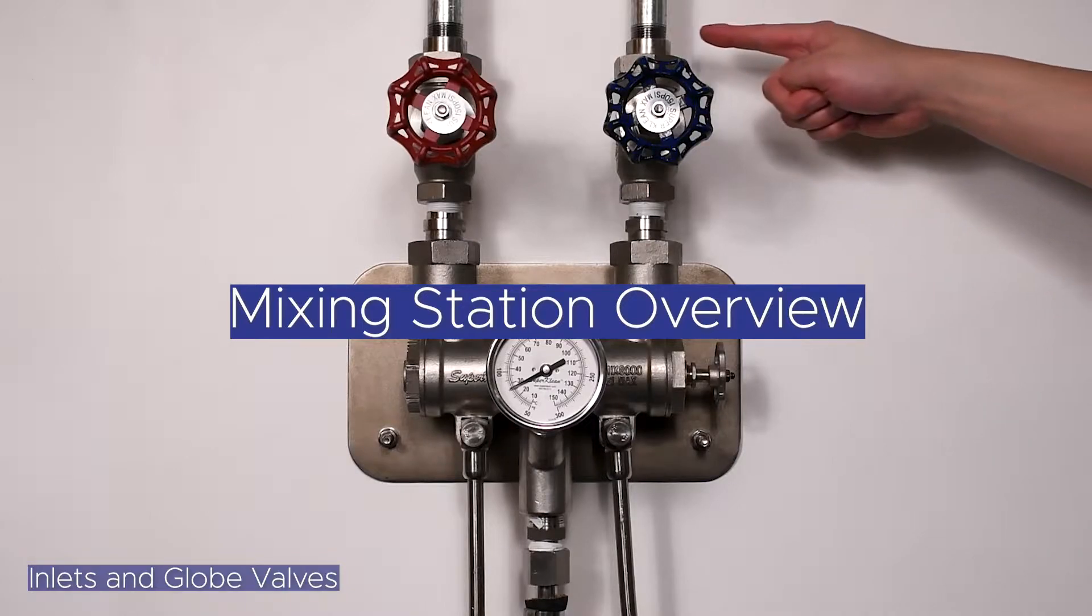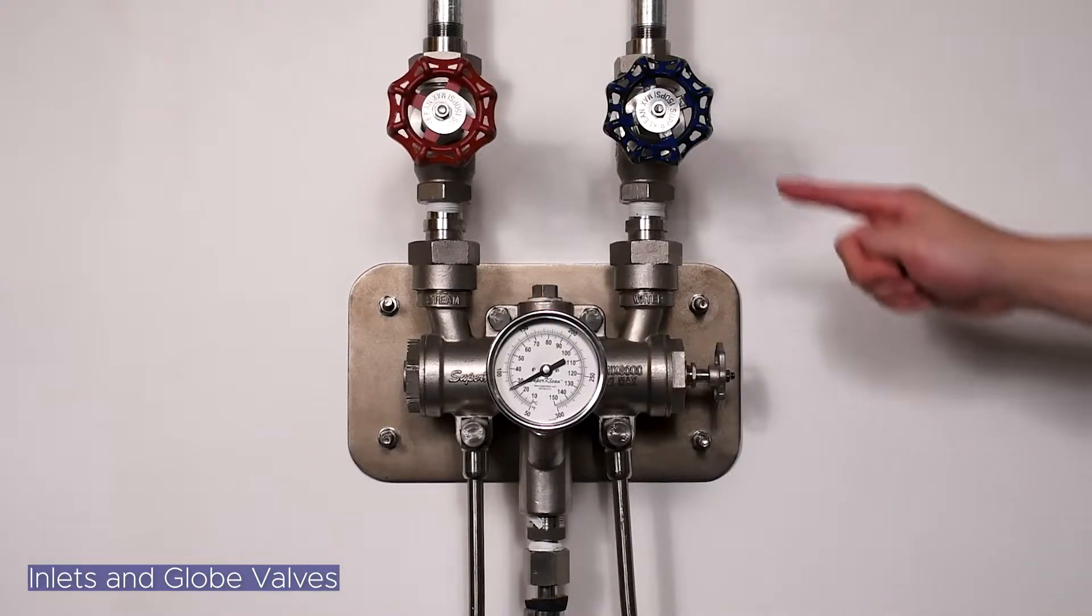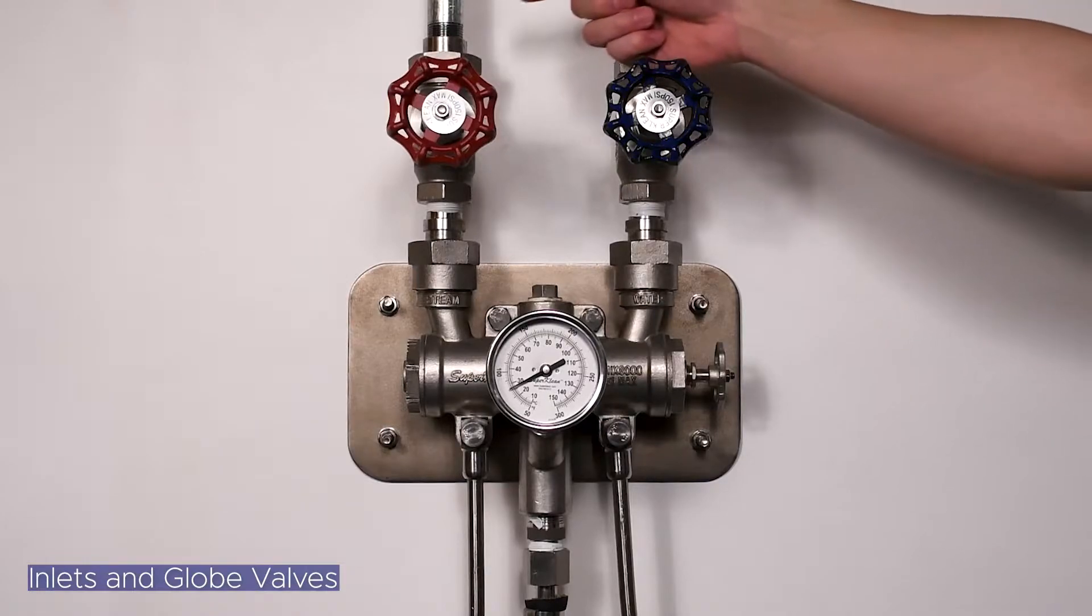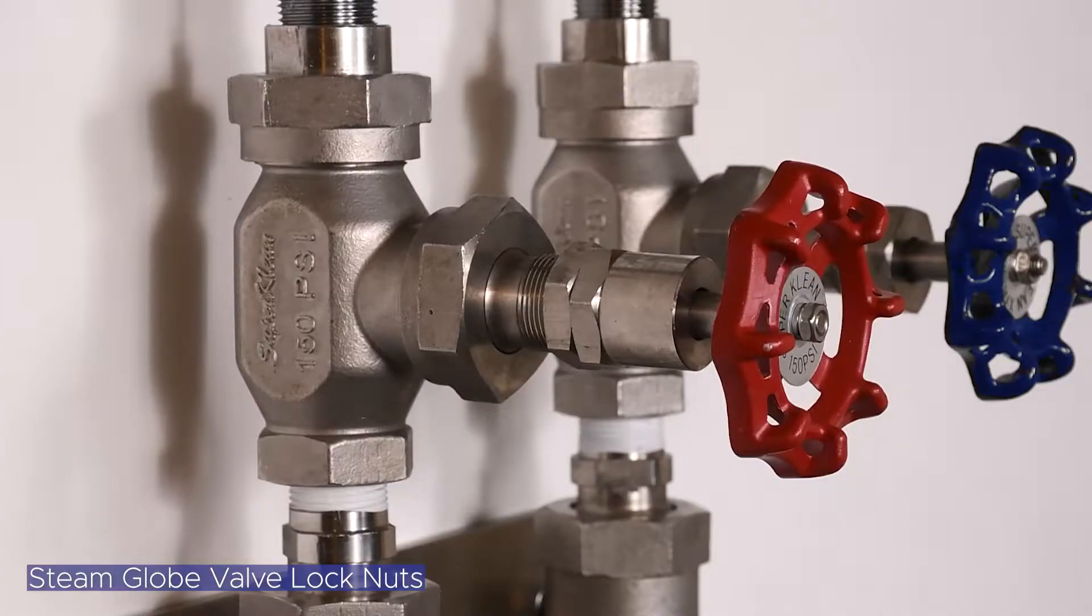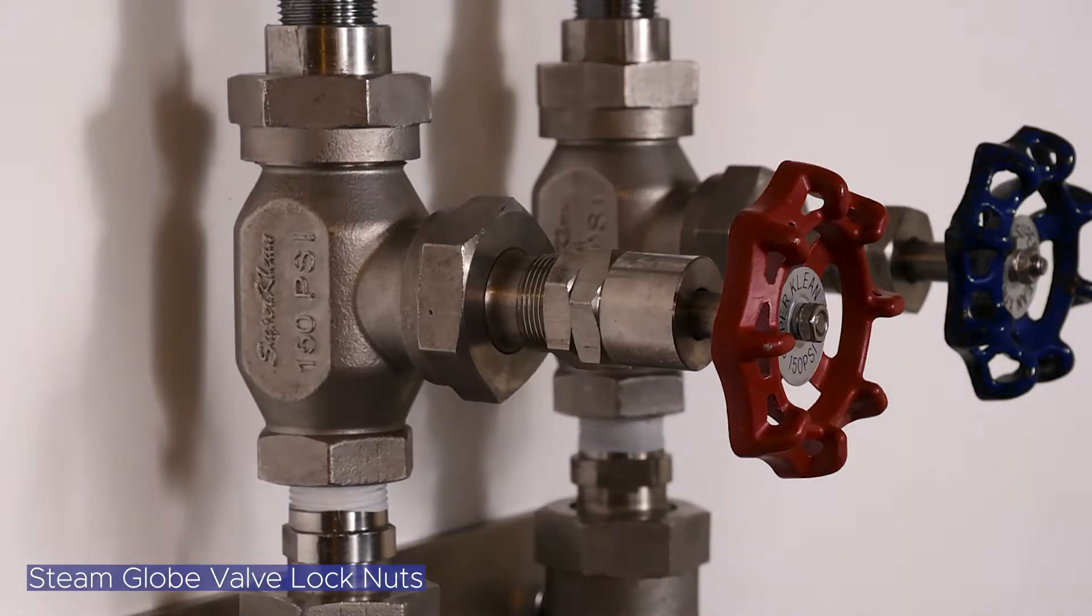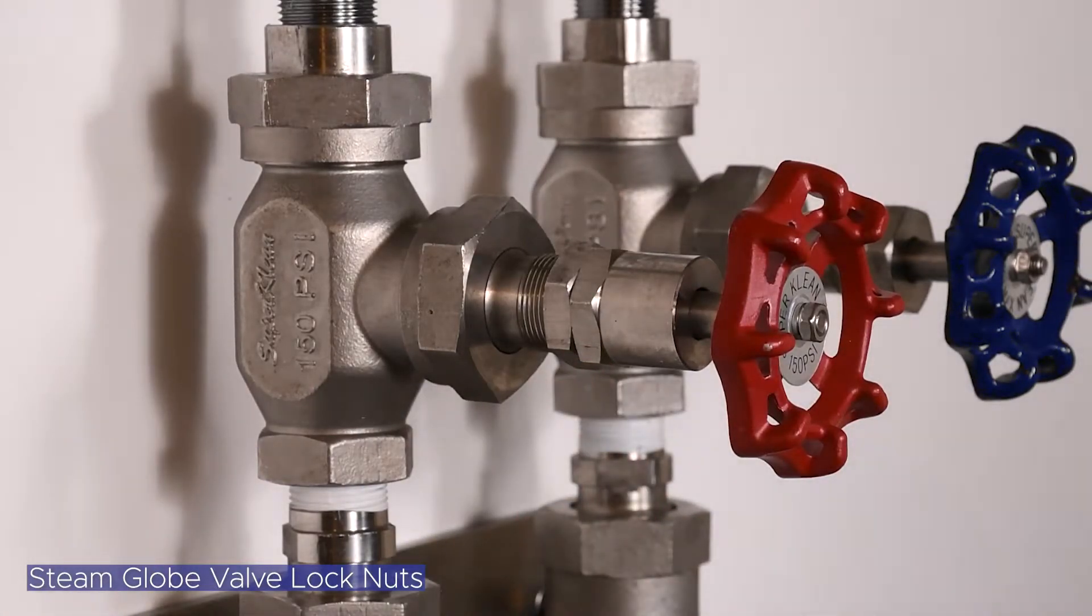Beginning at the top right is the cold water inlet and blue cold water globe valve. On the left is the steam inlet controlled by the red steam globe valve. Behind the red steam globe valve are the Duramix lock nuts that help set and lock in the correct amount of steam pressure.